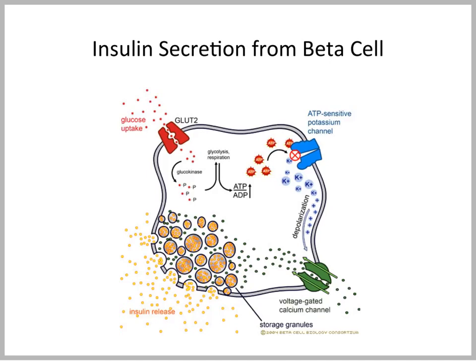The increase in ATP, or better said, the change in the ATP-ADP ratio, leads to a closure of so-called ATP-sensitive potassium channels. This channel is usually open in the unstimulated cell, and potassium freely goes in and out of the beta cell. So when ATP increases and this channel closes, potassium ions accumulate inside the beta cell, leading to a depolarization of the plasma membrane.